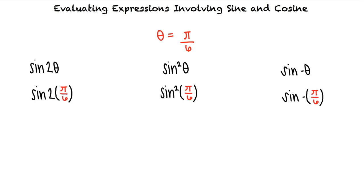Looking at the first expression, 2 times π/6 equals π/3. And I know the sine of π/3 is square root of 3 over 2. That's right.